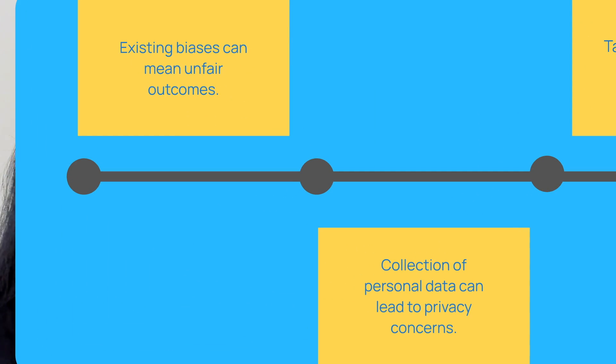First, consider existing biases. Because AI is built by humans, sometimes AI systems end up reflecting the biases in the data they're trained on, which can mean unfair outcomes.